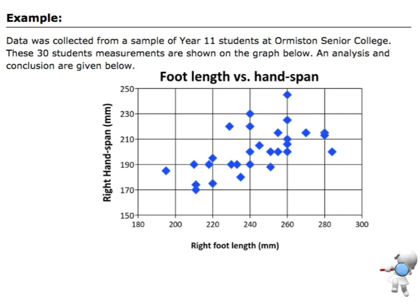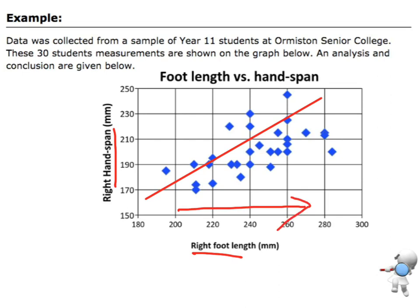In this example, we've got a sample of Year 11 students at OSC. We've got their right foot length versus their right hand span, and we've got a data set there. In previous videos, we've looked at how we can find our line of best fit through the middle. We can tell that there's definitely a pattern going on — as somebody's right foot length is increasing, their hand span is also increasing.